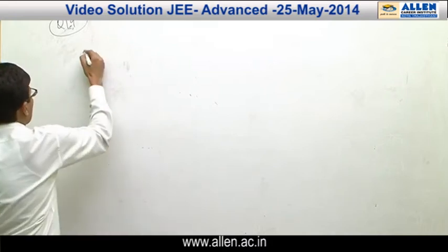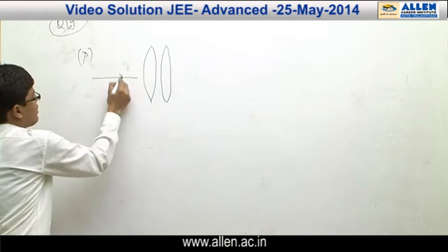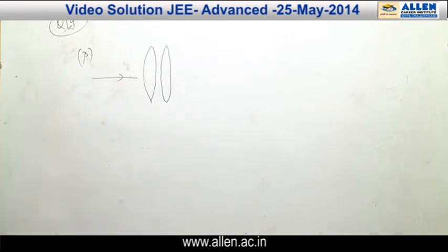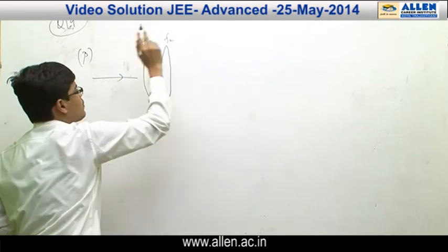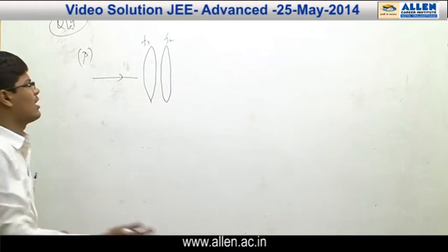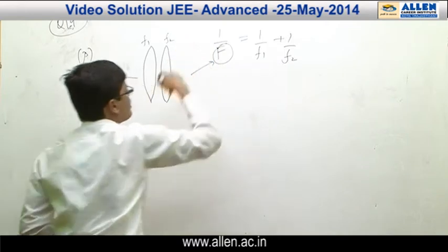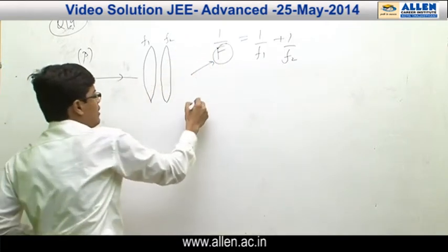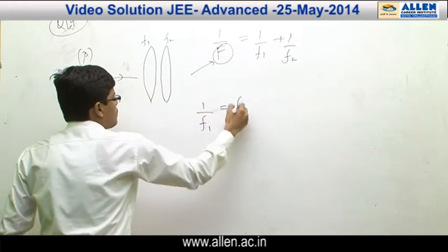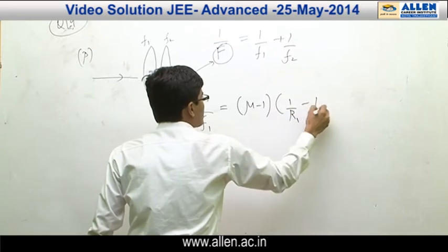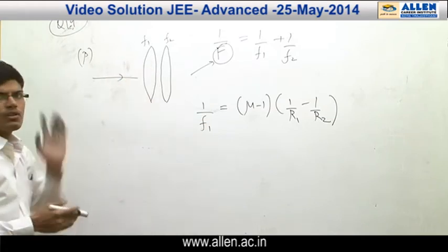Let us start with P. P is a combination of two lenses. Let us say the ray is coming in this direction. Let the focal length of the first lens be F1 and of the second be F2. We have to find the effective focal length, given by 1/F = 1/F1 + 1/F2. Now F1 would be given by the lensmaker's formula: 1/F1 = (μ − 1)(1/R1 − 1/R2), where R1 and R2 are the radii of curvature of the first and second surfaces.